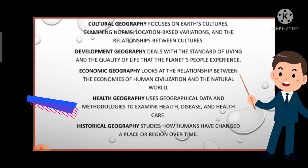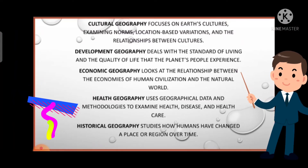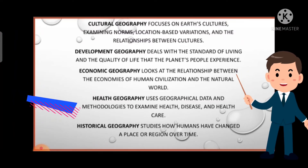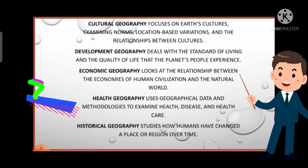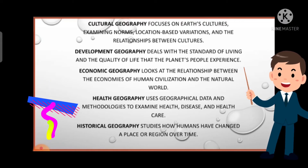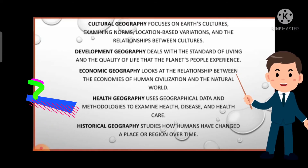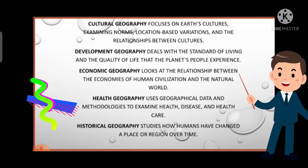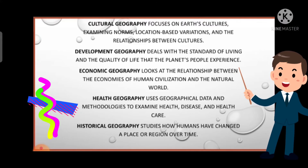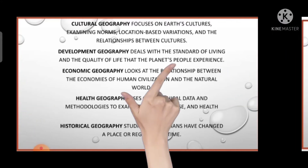In historical geography we study what changes and developments have occurred in a particular region, and if developments have not occurred, what are the reasons for that. We study how humans have changed a place or region over time — what changes have taken place according to the passage of time.